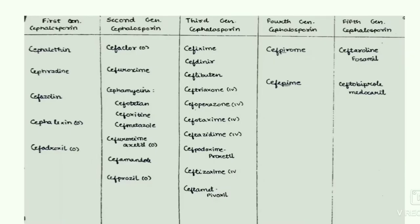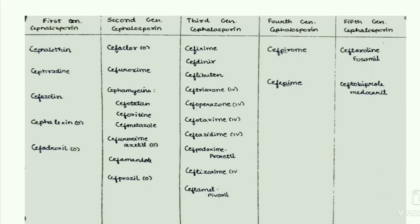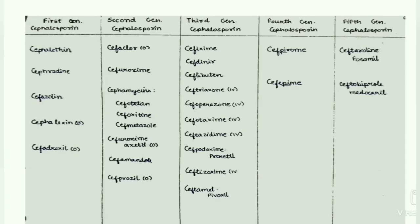Now we will discuss the classification: first generation, second generation, third generation, fourth generation, and fifth generation cephalosporins. In the first generation, the cephalosporins included are cephalothin, cephradine, cefazolin, cephalexin, and cefadroxil. Of all these, cephalexin and cefadroxil are orally given.